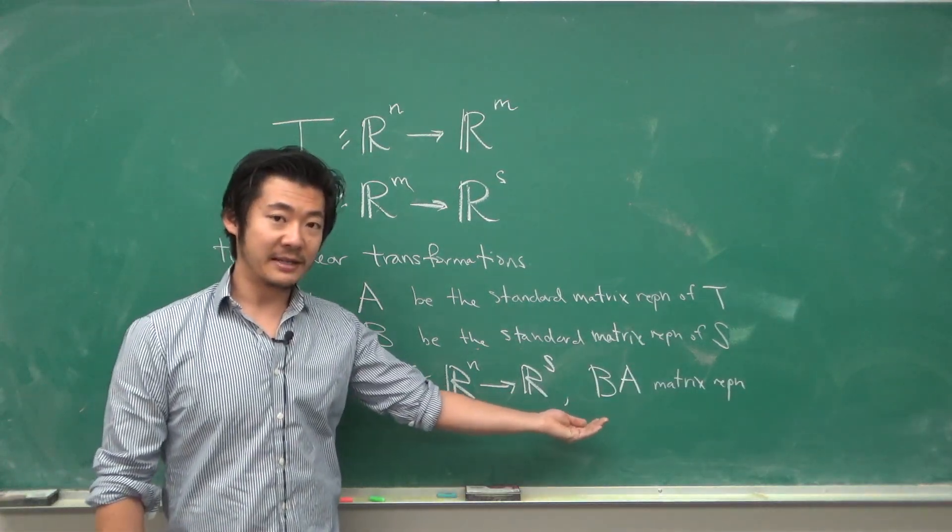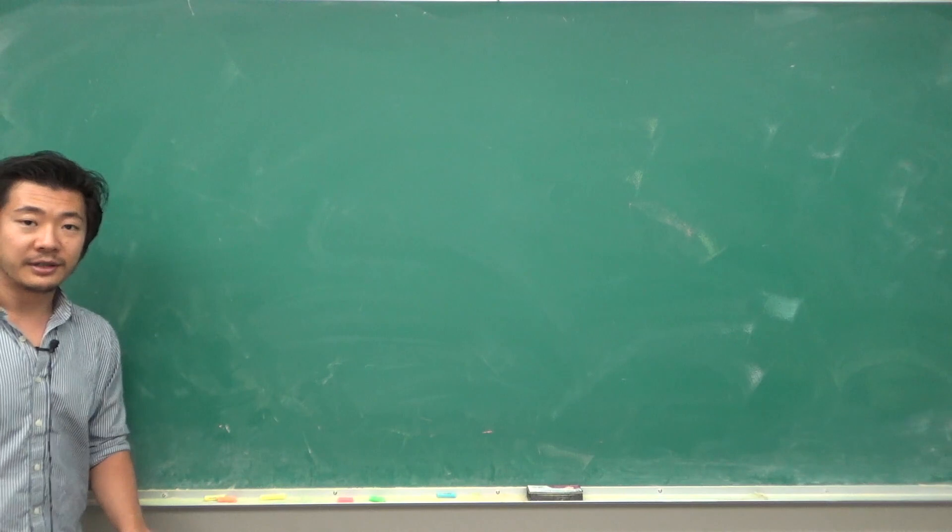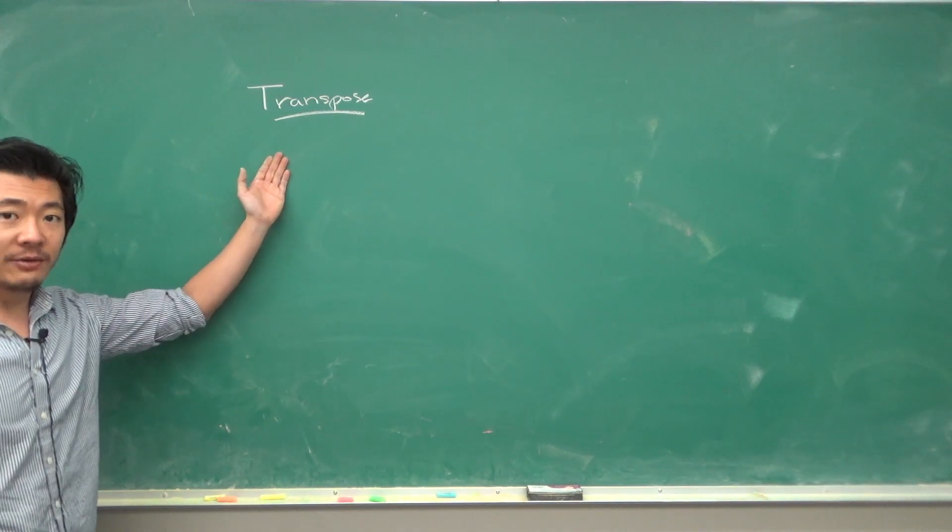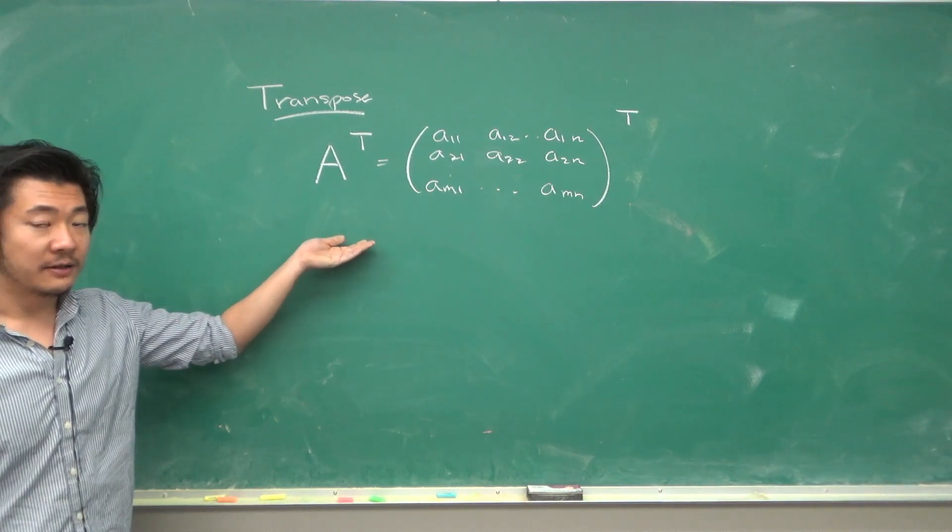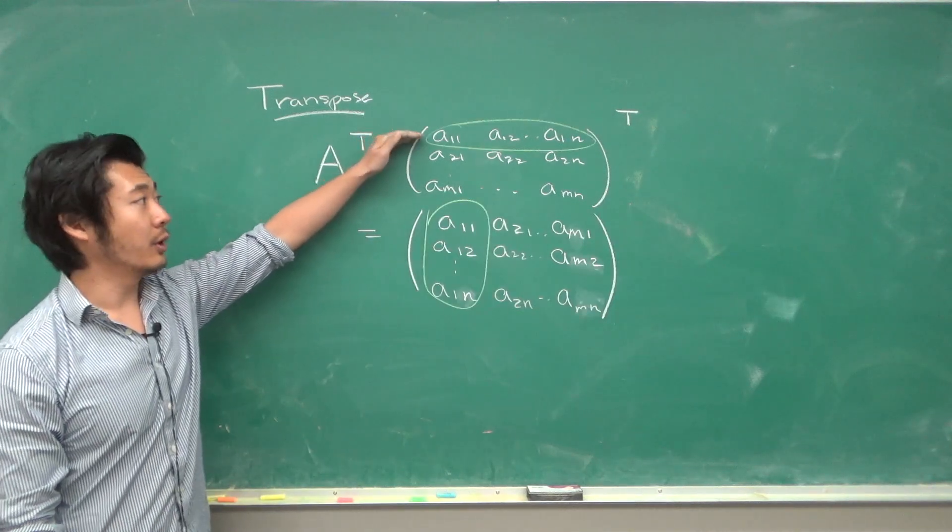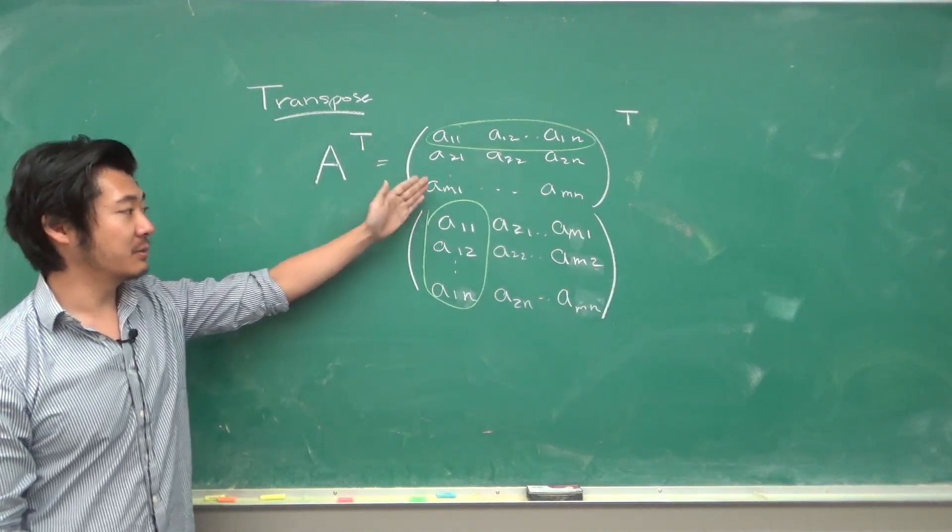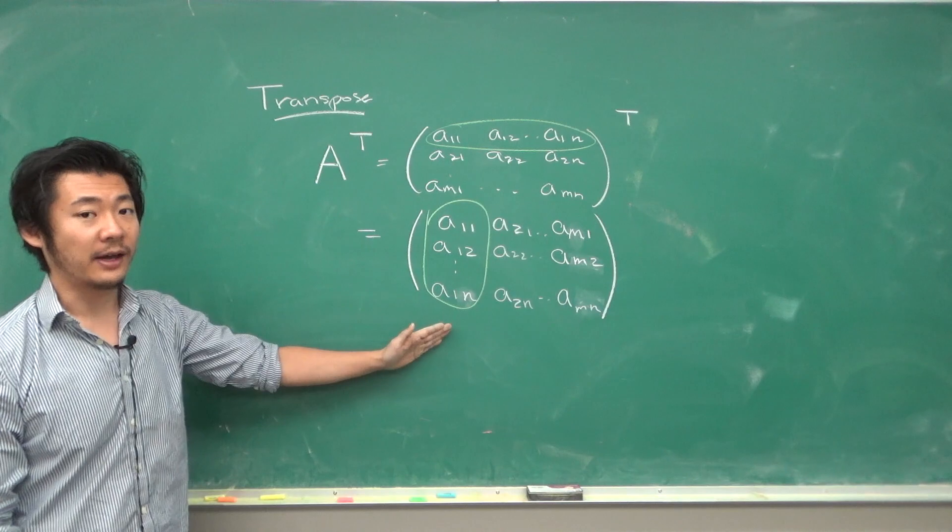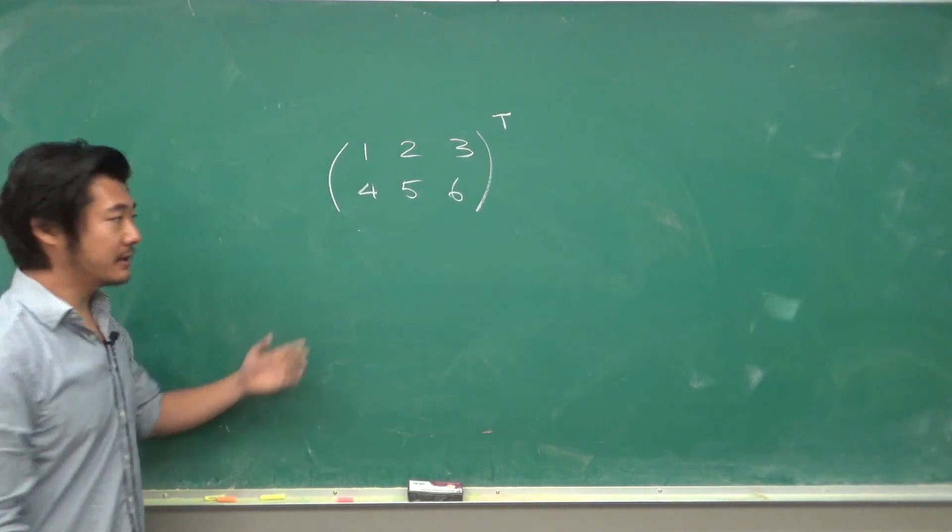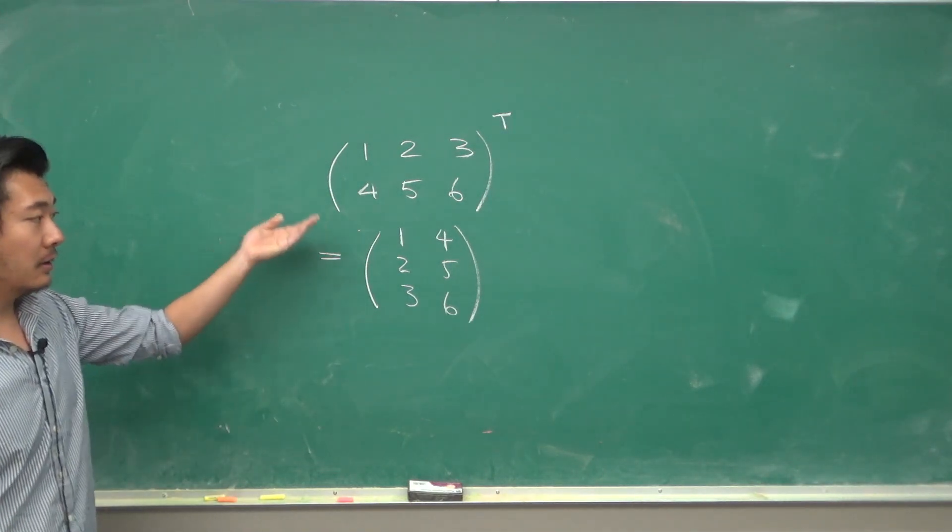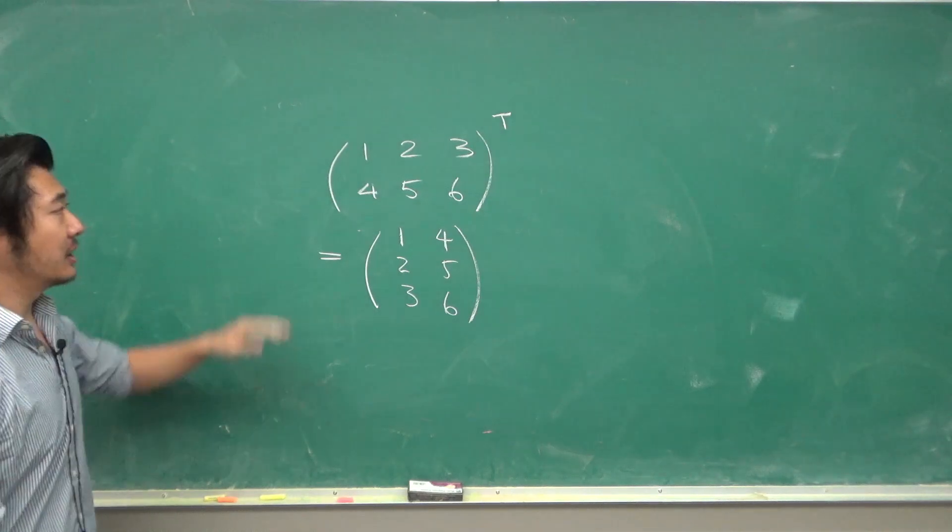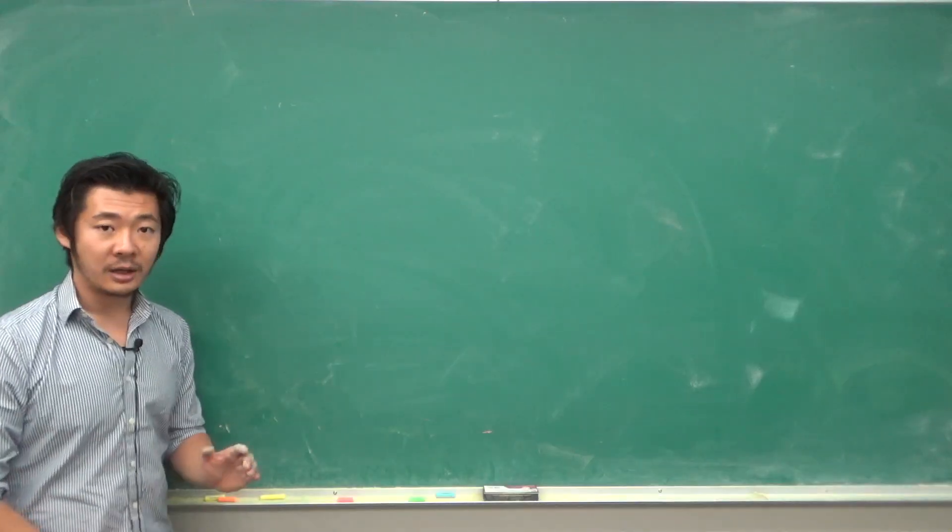To close off this video, we define one more thing: the transpose of a matrix. A transpose is defined to be the matrix where the rows and columns are switched, so the row of A in A transpose becomes the columns of A. For example, if we take the transpose of this matrix, we get this matrix. Notice that the rows and columns have flipped, and so the dimensions of the matrix also flip. This was a 2 by 3, now this is a 3 by 2.